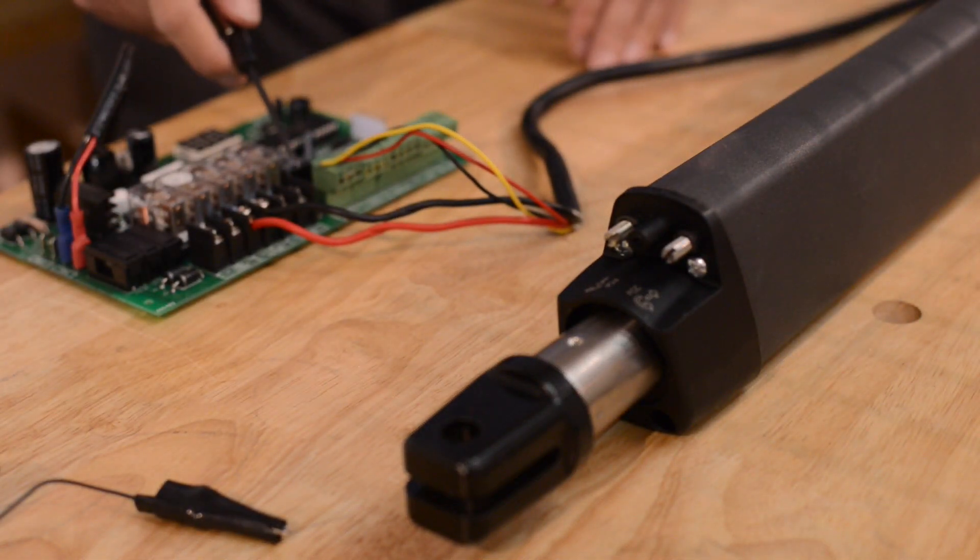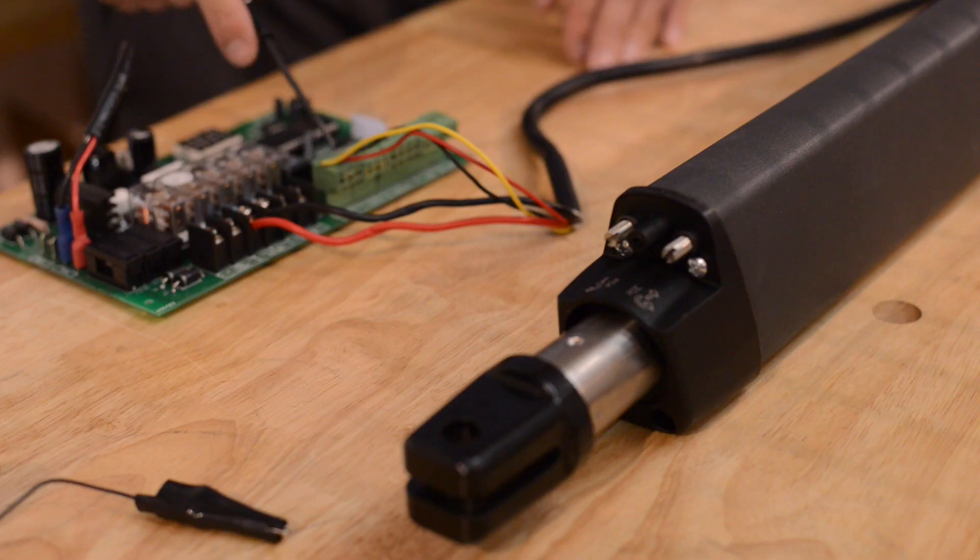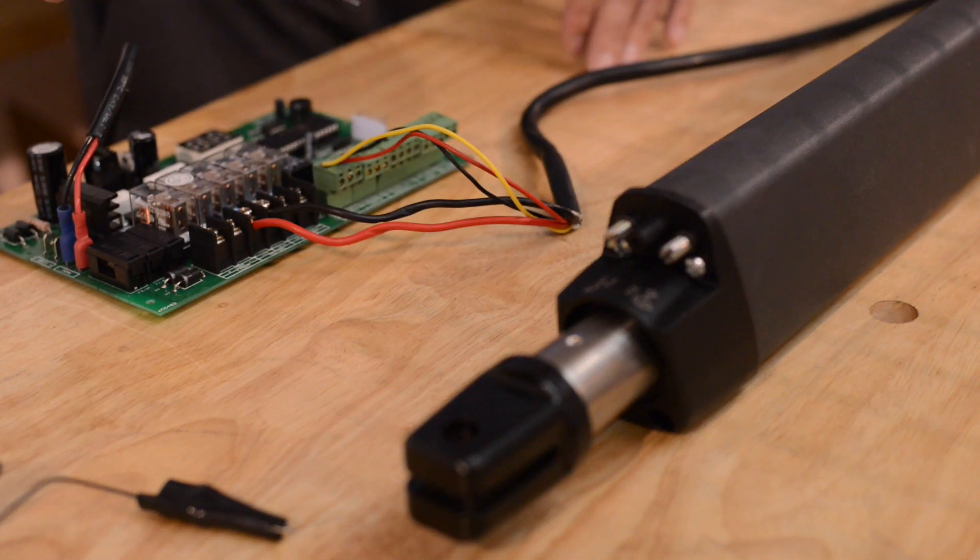We are going to repeat this procedure for the closed position. The third limit switch terminal is your closed limit. For pull to open, it's going to have the black wire in there.